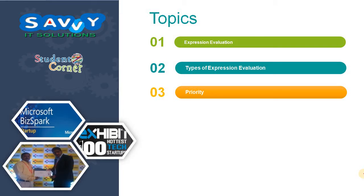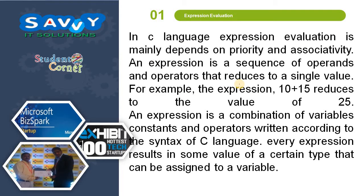We are discussing expression evaluation, types of expression evaluations, and operator priority. In C, expression evaluation mainly depends on priority and associativity. An expression is a sequence of operands and operators that reduces to a single value. For example, the expression 10 plus 15 reduces to 25. An expression is a combination of variables, constants, and operators written according to the syntax of C language, and every expression results in some value of a certain type that can be assigned to a variable.